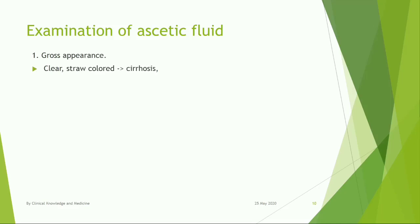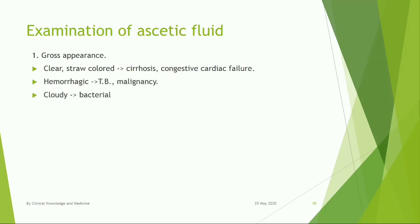Examination of ascitic fluid — Gross appearance: clear straw-colored in cirrhosis and congestive cardiac failure; hemorrhagic in tuberculosis and malignancy; cloudy in bacterial peritonitis; milky white in lymphatic obstruction.